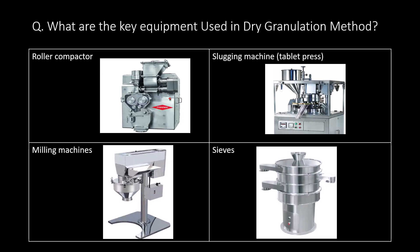What are the key equipment used in dry granulation? Roller compactor, slugging machine or tablet press, milling machines, and sieves are the key equipment used in dry granulation.